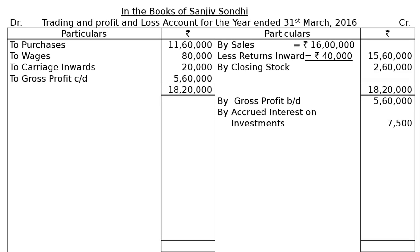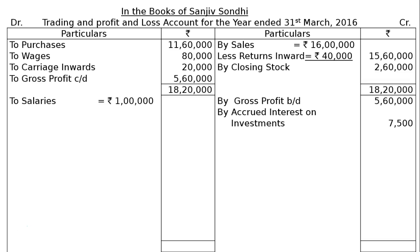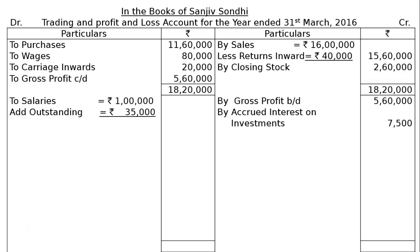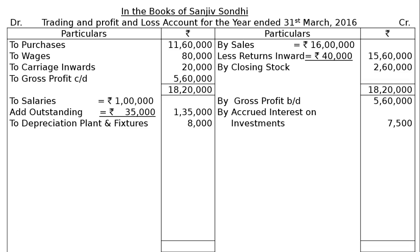This accrued interest is shown on the credit side of the Profit and Loss Account as income we have not yet received but it is due to be received. It will be shown under current assets in the Balance Sheet asset side. On the expenditure side: to salaries Rs. 1,00,000, add outstanding salaries from part B of the adjustment — this is added to salaries and shown as a current liability in the Balance Sheet. Final column: Rs. 1,35,000. Next, to depreciation on plant and fixtures Rs. 8,000.